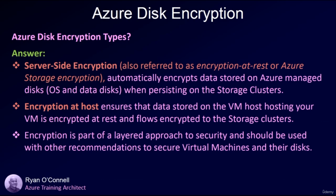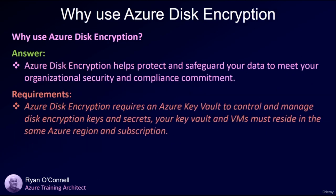There are two Azure disk encryption types: server-side encryption (also called encryption at rest or Azure Storage Encryption), which automatically encrypts data stored on Azure managed disks when persisting to the storage cluster; and encryption at host, which ensures data stored on the VM host is encrypted at rest and flows encrypted to the storage cluster. Encryption is part of a layered security approach and should be used alongside other recommendations. Azure Disk Encryption requires an Azure Key Vault in the same region and subscription as your VM.